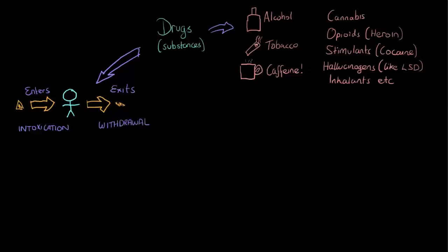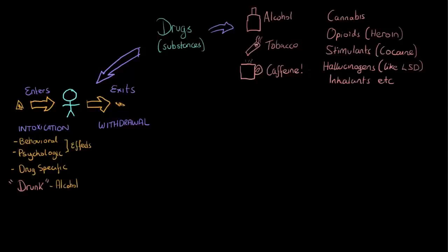What are we talking about when we mention intoxication? We're talking about both the behavioral and psychological effects of the drug on the person, and these can be very much drug-specific. When we're drunk, that's an example of intoxication with alcohol. Or when we describe somebody as being high, that is a colloquial way of describing someone being intoxicated with another substance, which may be something like cocaine or heroin.